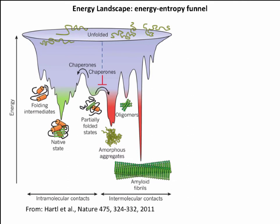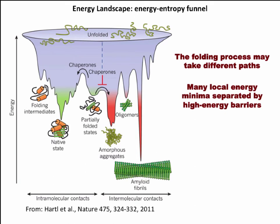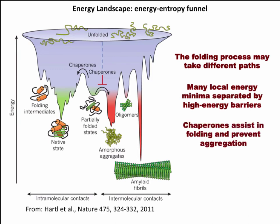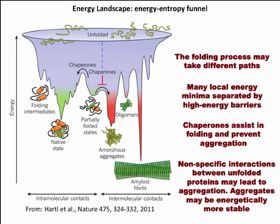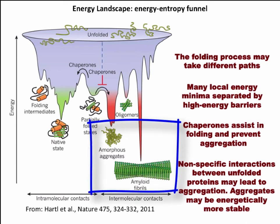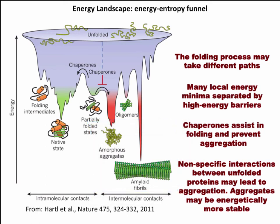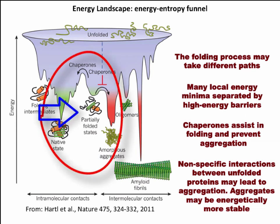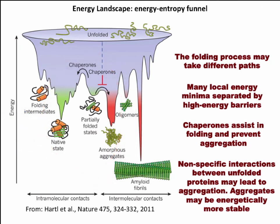Let's recap what we have discussed using the energy landscape presented in class. The folding process may take different pathways. Many local energy minima are separated by high energy barriers, as seen in the landscape. Chaperones assist folding and prevent aggregation. Non-specific interactions between unfolded proteins may lead to aggregation, which may be energetically more stable — and once that state is reached, there is no way back. If a protein is trapped in some intermediate structure, chaperones may help move it out of those states to the properly folded conformation, preventing it from going to an amorphous aggregate.